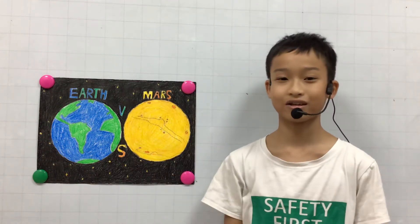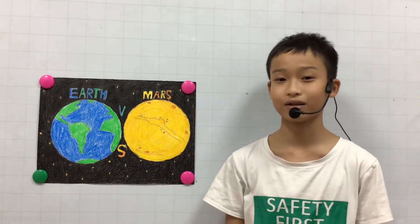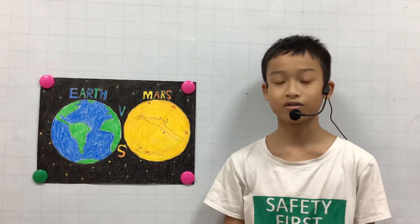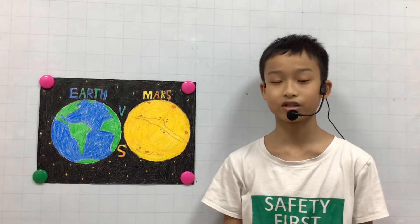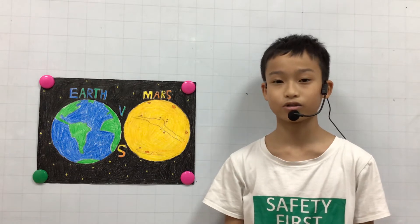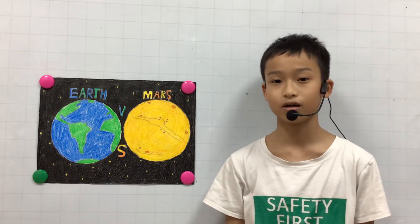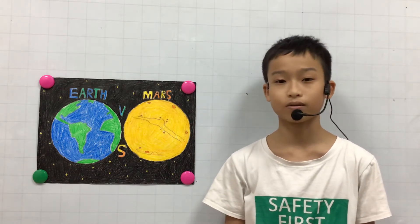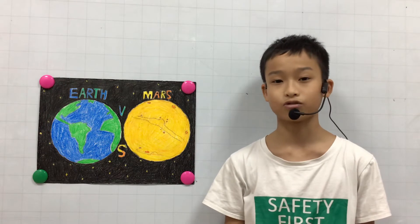Hello everyone, my name is Duc Tien. I'm 20 years old and I'm from Disco 4D. Today I'm going to tell you about the two planets, Earth and Mars. Firstly, I will talk about my introduction.